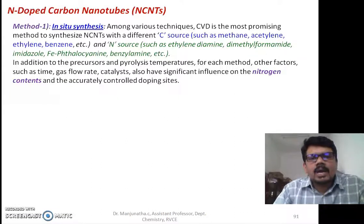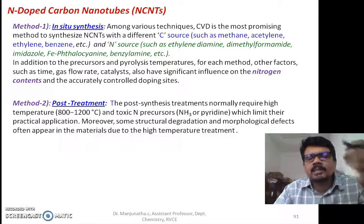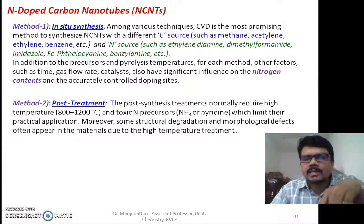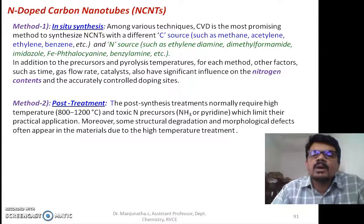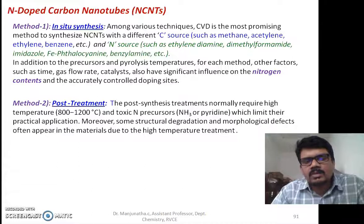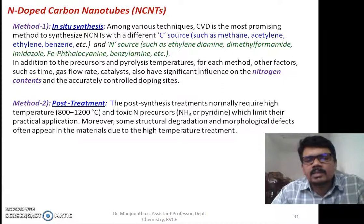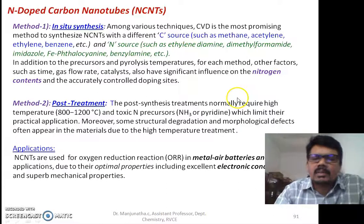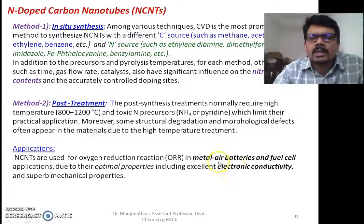Method two is post-treatment synthesis. Once you prepare the carbon nanotube, we go for doping as a second step. This normally requires very high temperature and toxic nitrogen precursors like pyridine and ammonia. Because of this high temperature and toxic precursors, this has less practical applications. Generally, people use the in-situ method for doping nitrogen in carbon nanotubes.